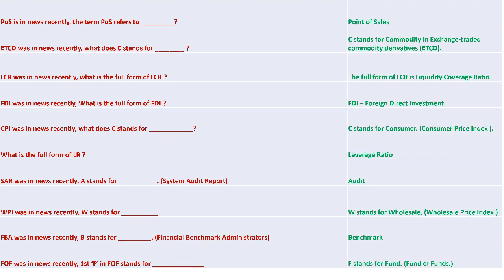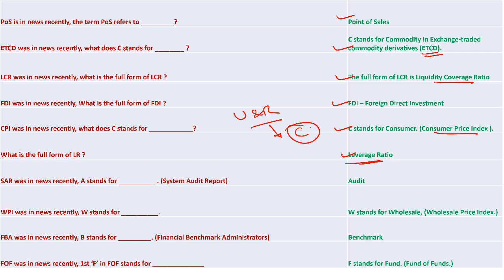POS is Point of Sales. C stands for Commodity in Exchange-Traded Commodity Derivative (ETCD). LCR is Liquidity Coverage Ratio. LR is Leverage Ratio. FDI is Foreign Direct Investment. C stands for Consumer in Consumer Price Index, of which there are two kinds - urban and rural - plus a third which is combined. In SAR, A stands for System Audit Report or Suspicious Activity Report - be careful and know the context. W stands for Wholesale in Wholesale Price Index.